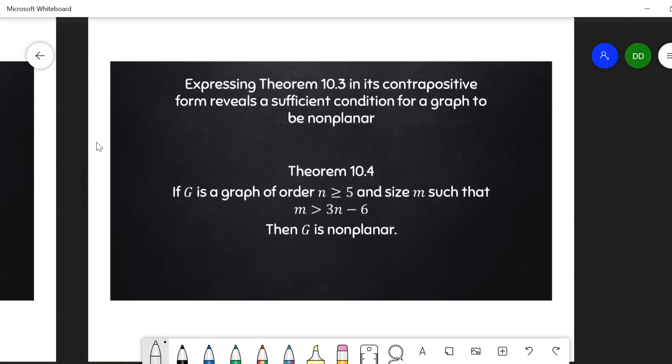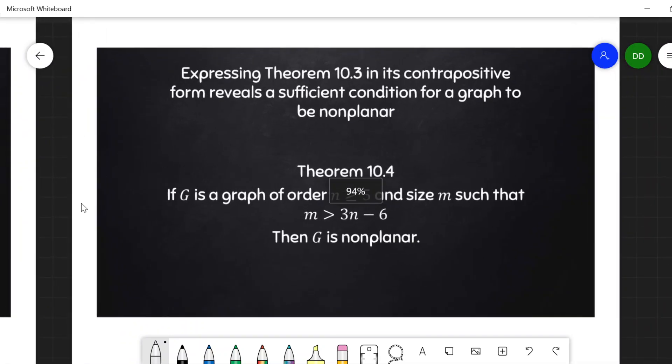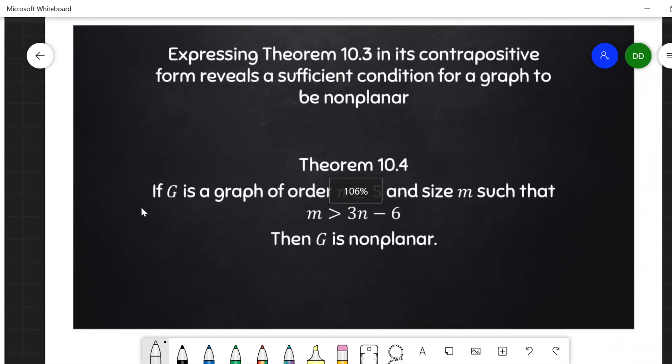How do we show a graph is not planar? Well, this gives us a way to show it. Notice this is just a sufficient condition to show a graph is not planar. We haven't yet shown this is necessary. In fact, it's not necessary.